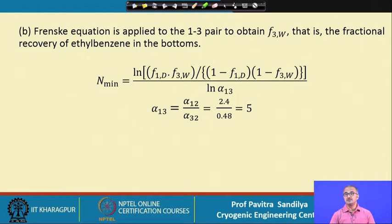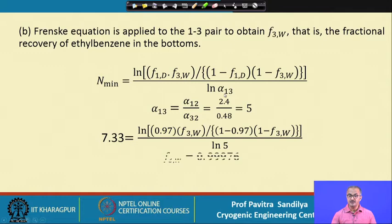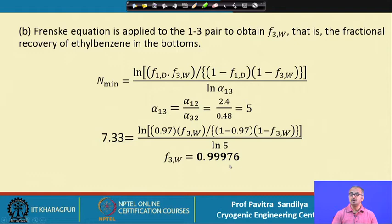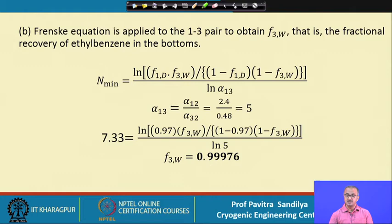α₁₃ = 5 reflects the much larger difference in boiling points between component 1 and component 3. Plugging this value into the Fenske equation and solving for F₃W — the recovery of ethyl benzene in the bottom product — we get 0.99976, almost exactly 1. This clearly shows that ethyl benzene, being the heaviest component, tends almost completely to go to the bottoms rather than the distillate.